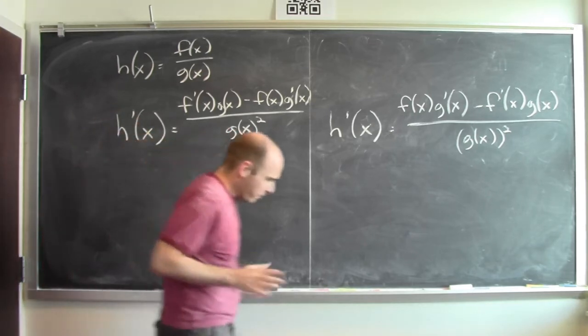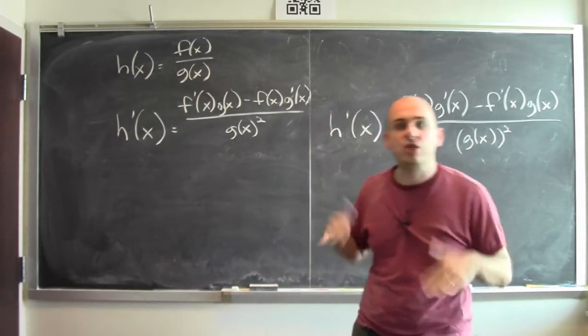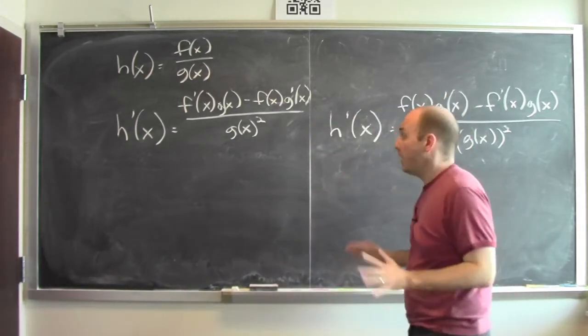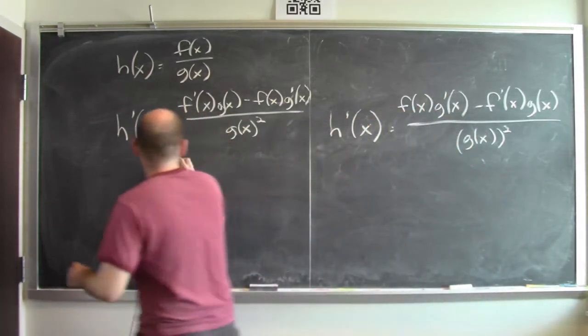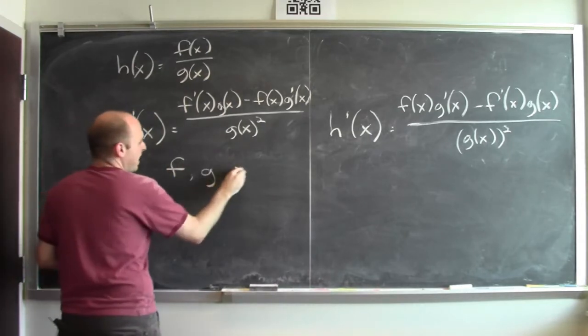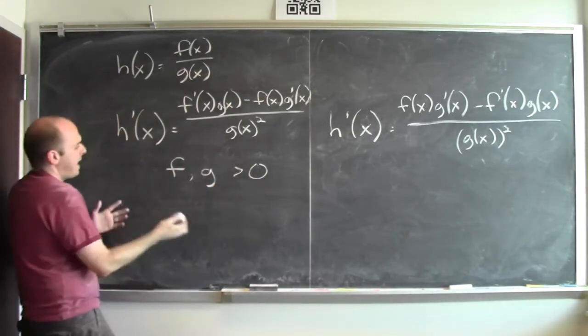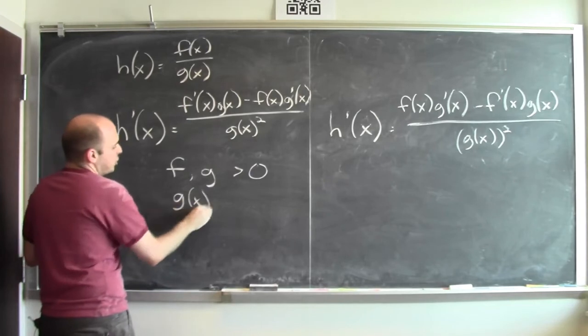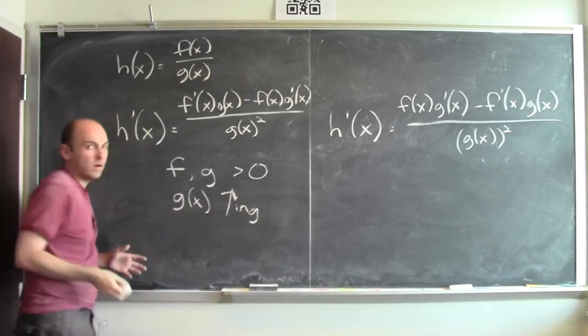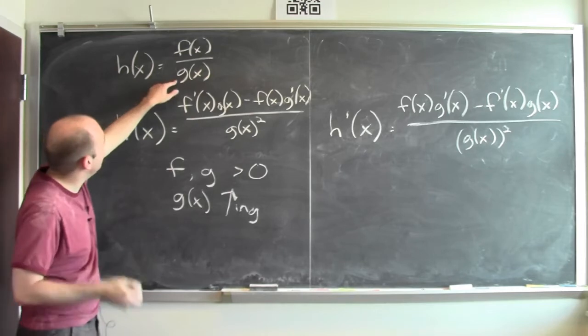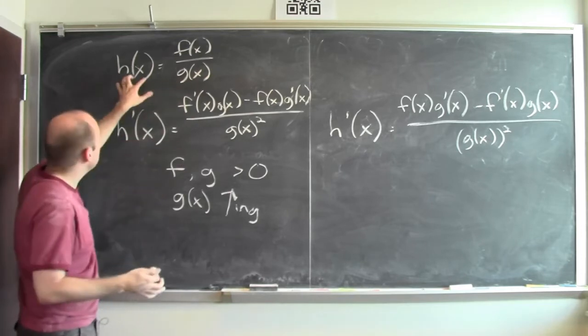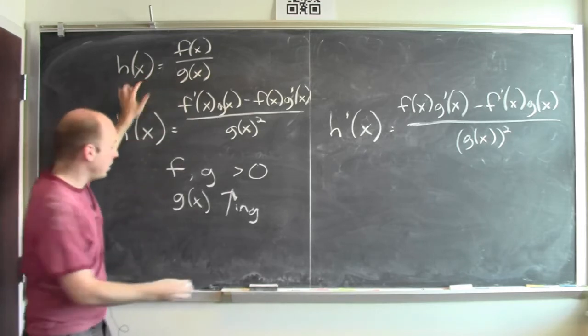One way to remember this is to think about the situation when f and g are both positive. Then what happens? Let's suppose that f and g are positive, and let's suppose that g(x) is increasing. Well, what happens if g(x) is getting bigger? If the denominator is getting bigger, this quotient is getting smaller.